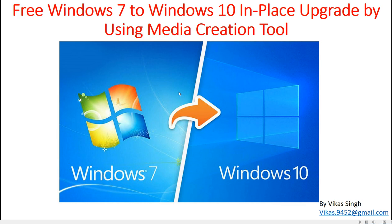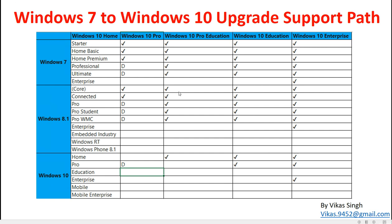To check what type of Windows 10 you can upgrade to, there is an upgrade supported path published on the Microsoft website. I am going to publish this link in my description so you can verify which Windows 7 edition supports which type of Windows 10 upgrade. For example, Windows 7 Enterprise only supports Windows 10 Enterprise upgrade. So if you were running Enterprise and want to upgrade to Windows 10 Pro, it's not going to be supported.